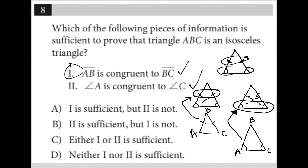Answer choice A says one is sufficient but two is not — that's not the case. B says two is sufficient but one is not — that's also not the case. Choice C says either one or two is sufficient. Yes, they could be separate — either one alone or two alone is enough. So choice C is the correct answer. Choice D says neither one nor two is sufficient, which can't be right. As long as we're told either two sides are congruent or two angles are congruent, that's enough. So the best answer is choice C.